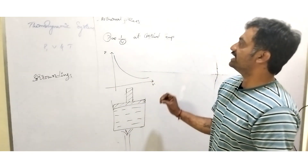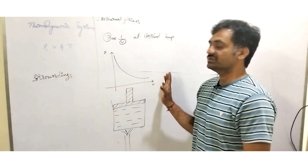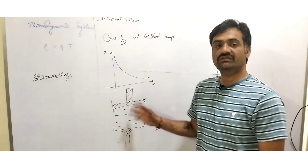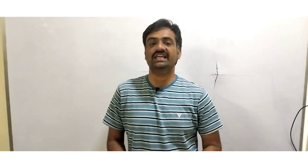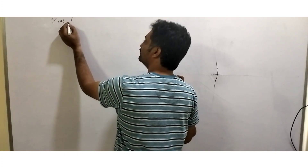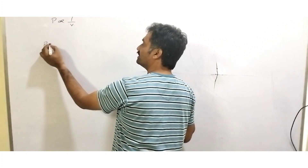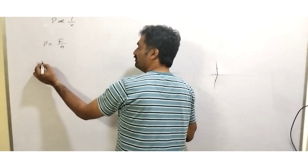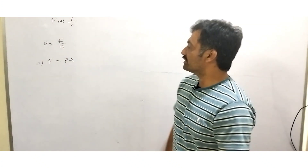Now we are going to represent the expression for work done in the case of isothermal process. We consider the expression for pressure, where pressure equals force by area, so force equals pressure into area. We represent the amount of work done by the system or on the system by a displacement of dx. The piston has been moved by a displacement of dx, and the small work done is represented as dW.